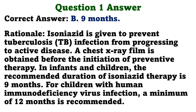Rationale. Isoniazid is given to prevent tuberculosis infection from progressing to active disease. A chest x-ray film is obtained before the initiation of preventive therapy. In infants and children, the recommended duration of isoniazid therapy is nine months. For children with human immunodeficiency virus infection, a minimum of 12 months is recommended.